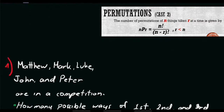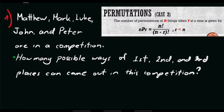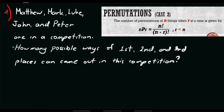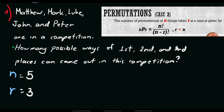For problem number 4: Matthew, Mark, Luke, John, and Peter are in a competition. How many possible ways can first, second, and third places come out? Since we have 5 participants, the value of n equals 5. We are asked to determine the possible arrangements for first, second, and third place, so the value of r equals 3.